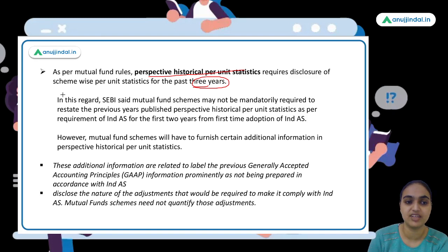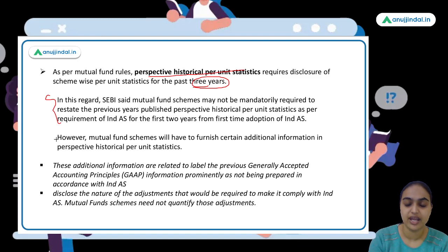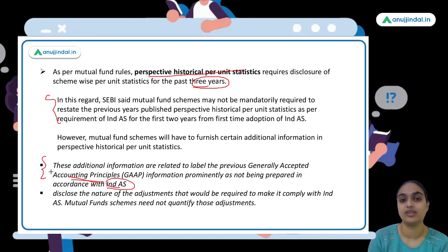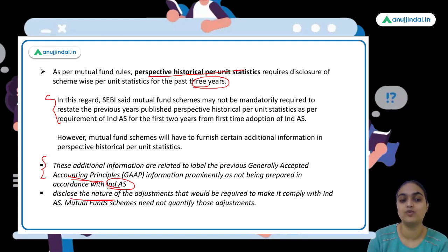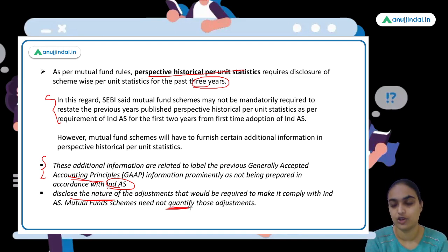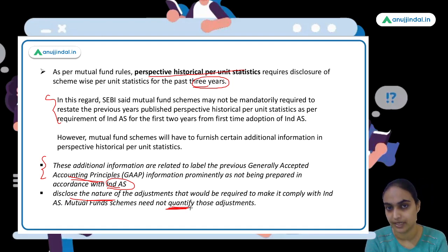Instead of restating the historical statistics, mutual funds need to share some additional information: first, which Generally Accepted Accounting Principles they are currently adhering to; and second, the nature of adjustments that will be required when they comply with Indian Accounting Standards — though they don't need to quantify those adjustments, just disclose their nature.